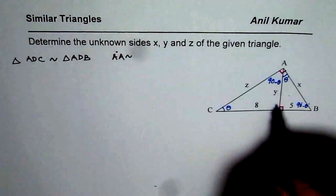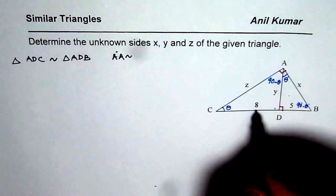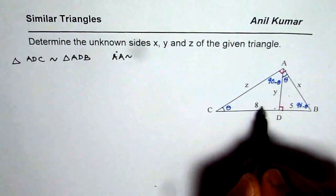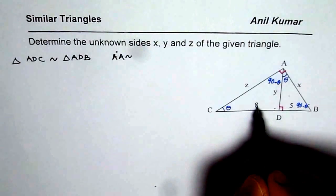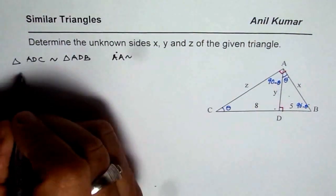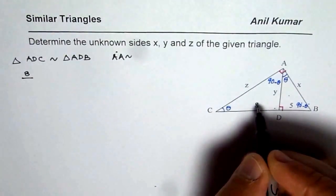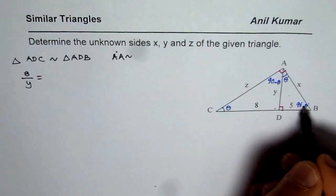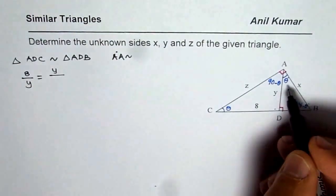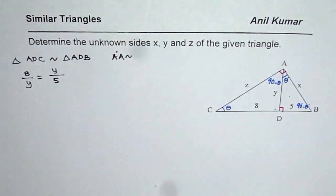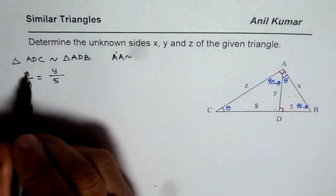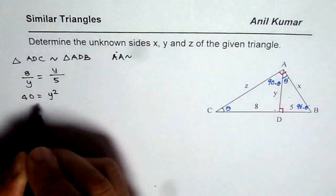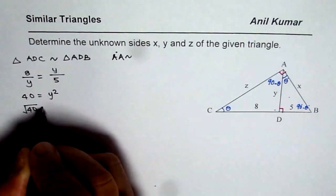Since they are similar triangles, their side ratios should be equal. We can write the ratios as: side opposite to 90 minus theta in one triangle is 8, so we write 8 over the side opposite to theta, which is Y. In the other triangle, side opposite to 90 minus theta is Y over side opposite to theta, which is 5. So we get 8/Y = Y/5. Cross-multiplying, we get Y squared equals 40.